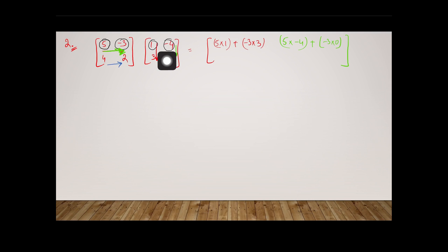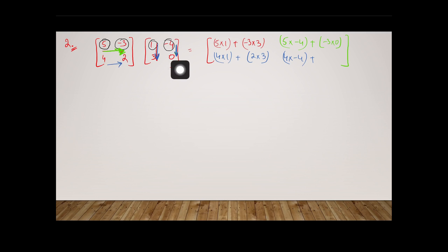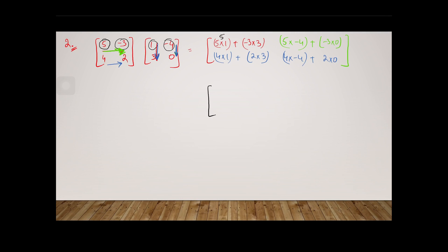Row two, four two, multiplied with column one: four times one plus two times three. Then with column two: four times minus four plus two times zero. Evaluating: five times one is five, plus minus nine gives negative four. Five times minus four is minus twenty, plus zero stays minus twenty. Four plus six is ten. Minus sixteen plus zero stays minus sixteen.